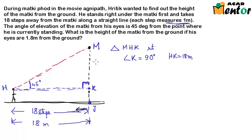We have to find out the height of the matki. So that would be MJ and not MK. The height of the matki is calculated from the ground and not from the eye level of Mr. Hrithik Roshan. So this is the ground and this point is J. So MJ has to be found out.